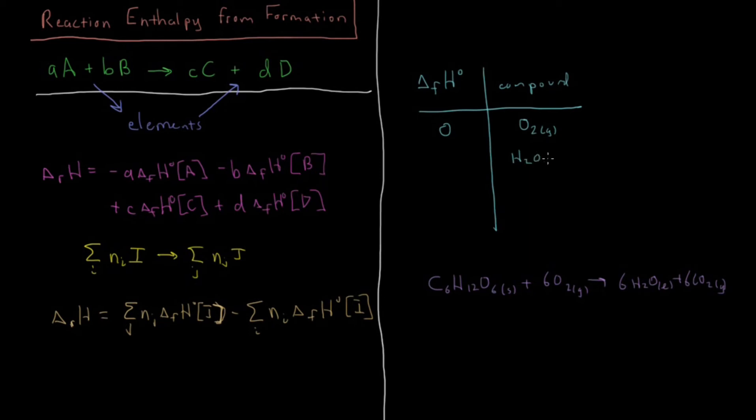For liquid water from H2 gas and a half mole of oxygen, minus 285.8 kilojoules per mole. For CO2 gas from one mole of solid carbon and one mole of O2 gas, it's going to be minus 393.5 kilojoules per mole.